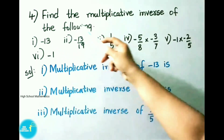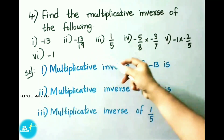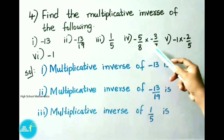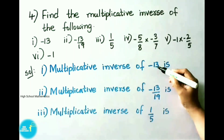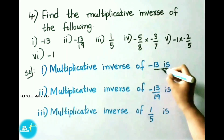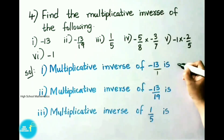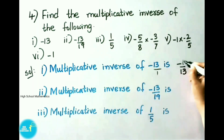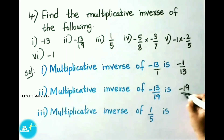See now, question number 4: find the multiplicative inverse of the following. First one: minus 13. Second one: minus 13 by 19. Third one: 1 by 5. Fourth one: minus 5 by 8 into minus 3 by 7. Fifth one: minus 1 into minus 2 by 5. And sixth one: minus 1. Let us see the solution. Multiplicative inverse of minus 13: since minus 13 has no denominator, we take denominator 1, so minus 13 by 1. Multiplicative inverse means reciprocal of the given number. So multiplicative inverse is minus 1 by 13. Second one: multiplicative inverse of minus 13 by 19 is minus 19 by 13.